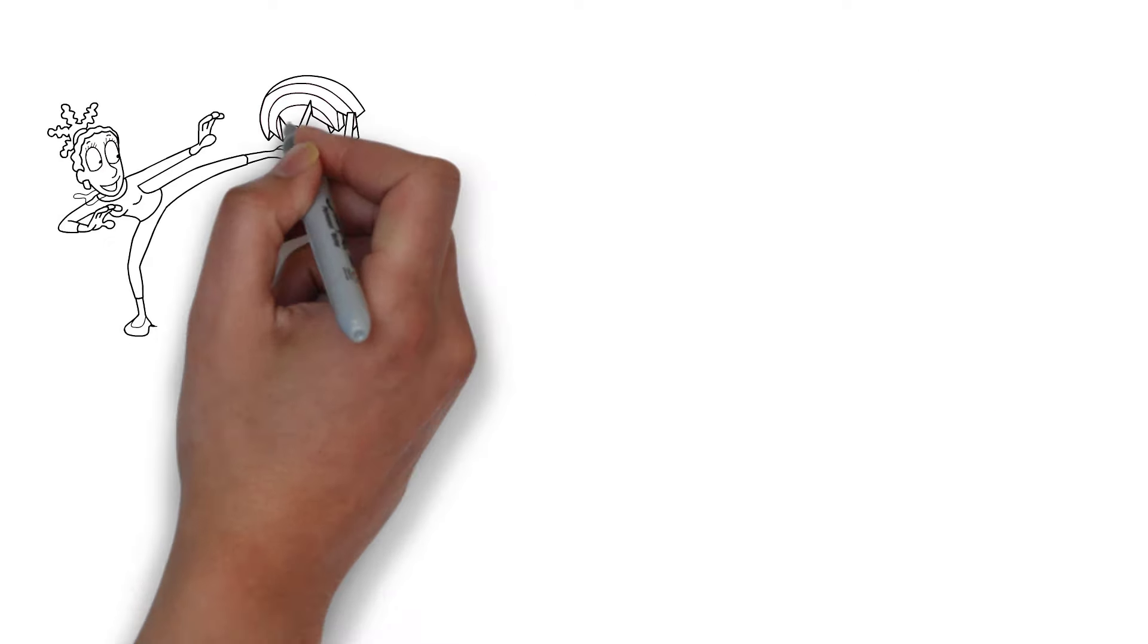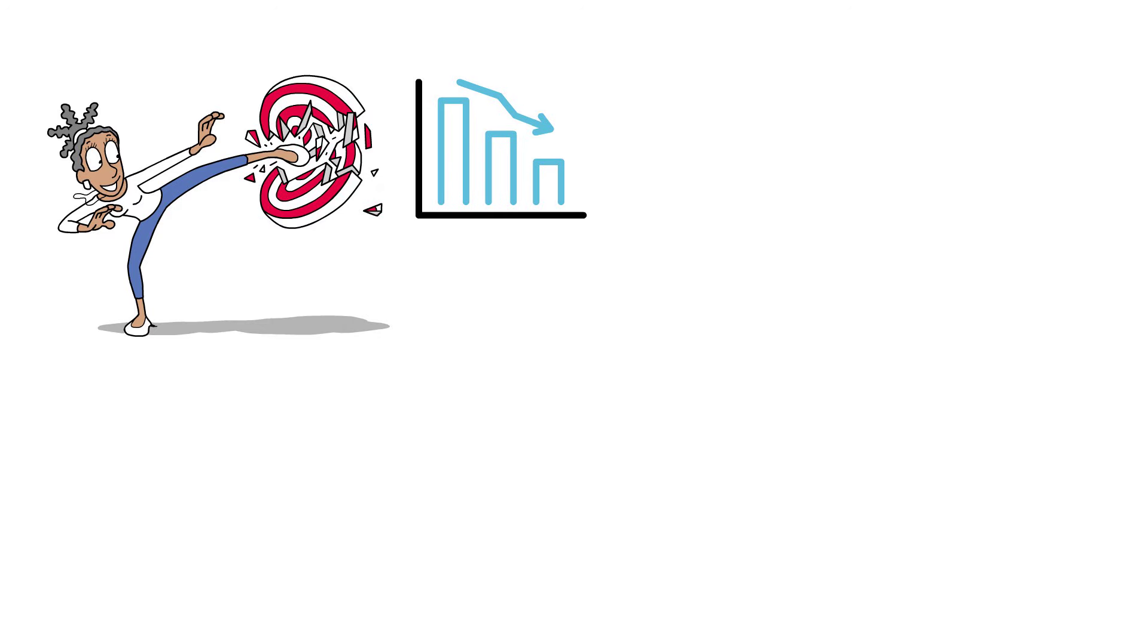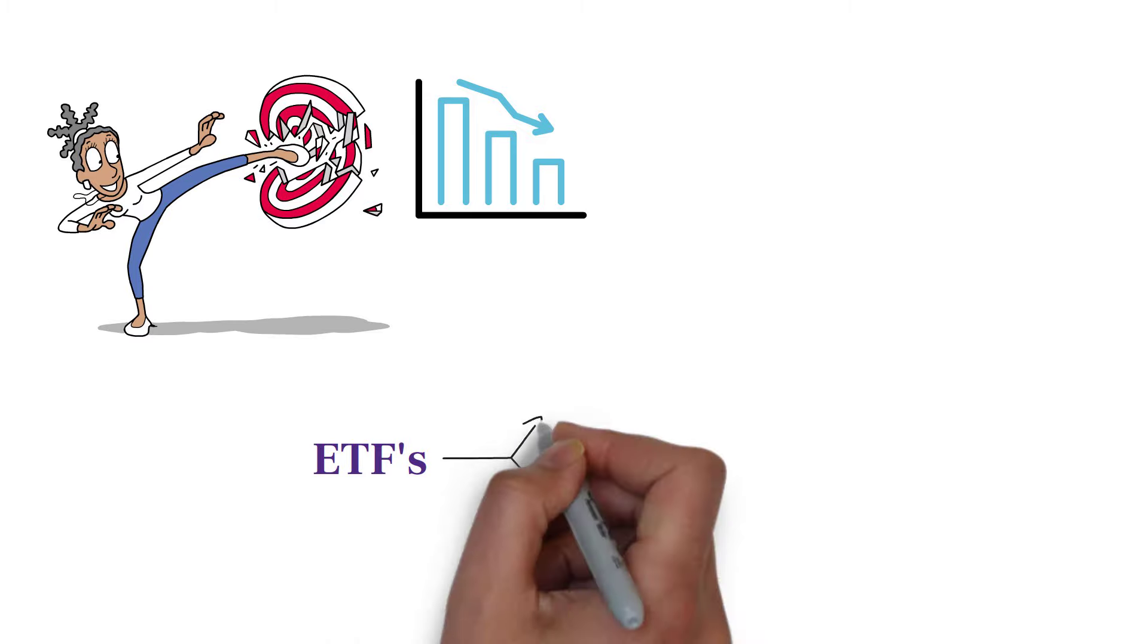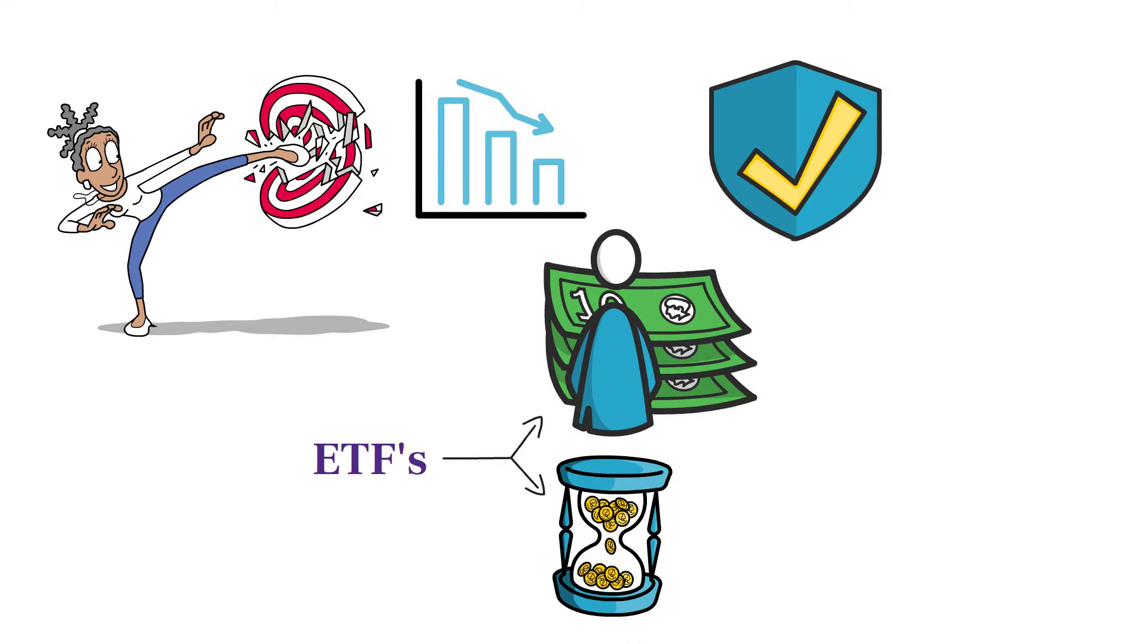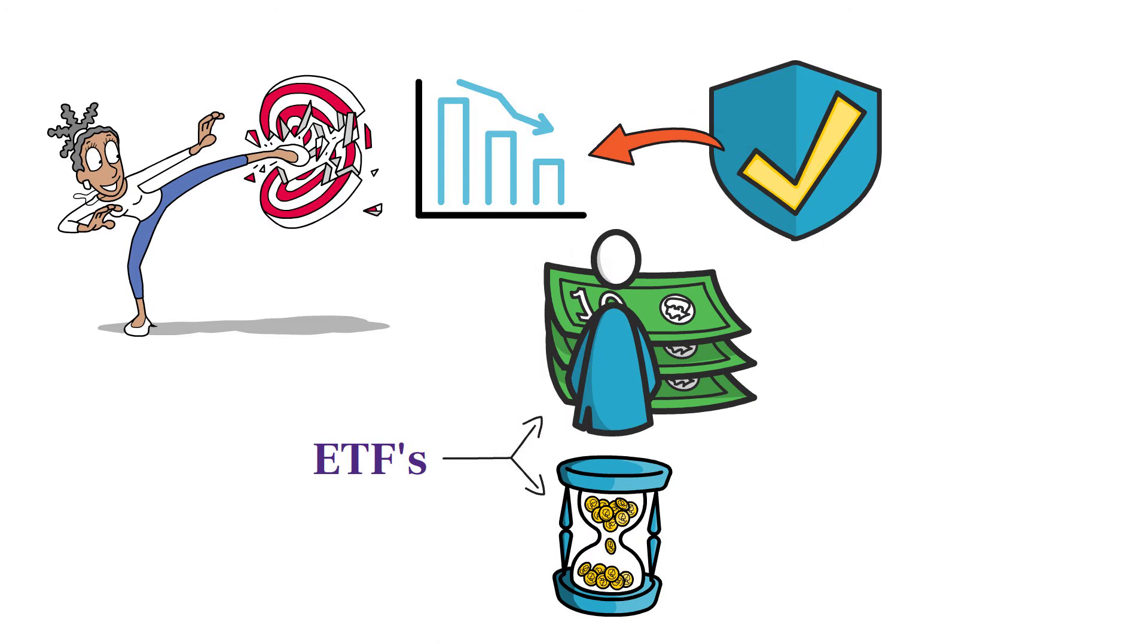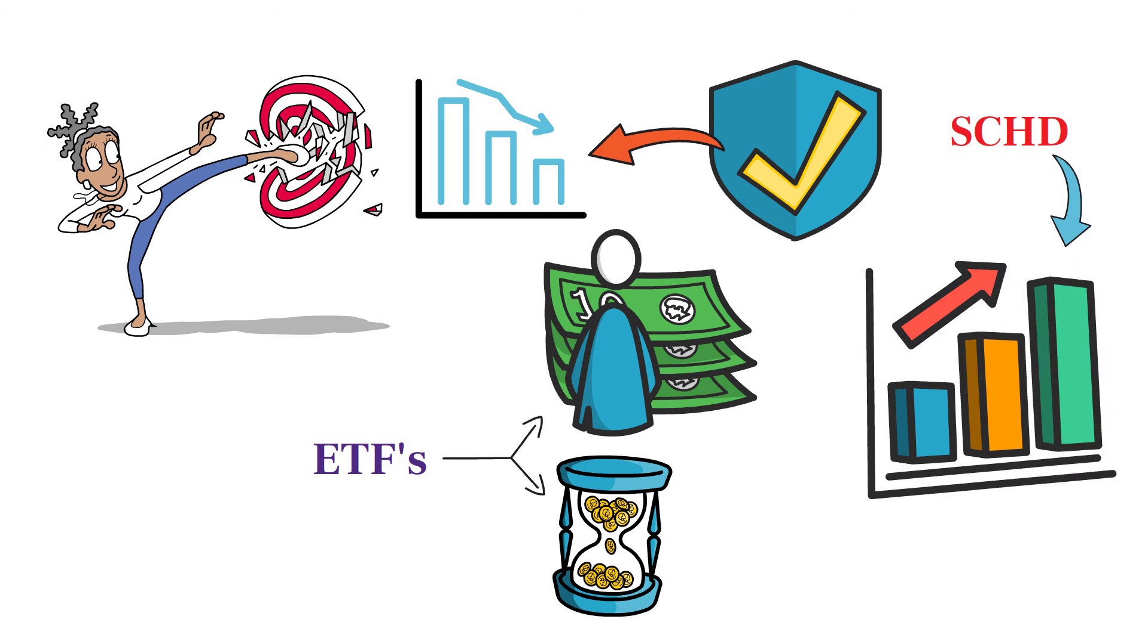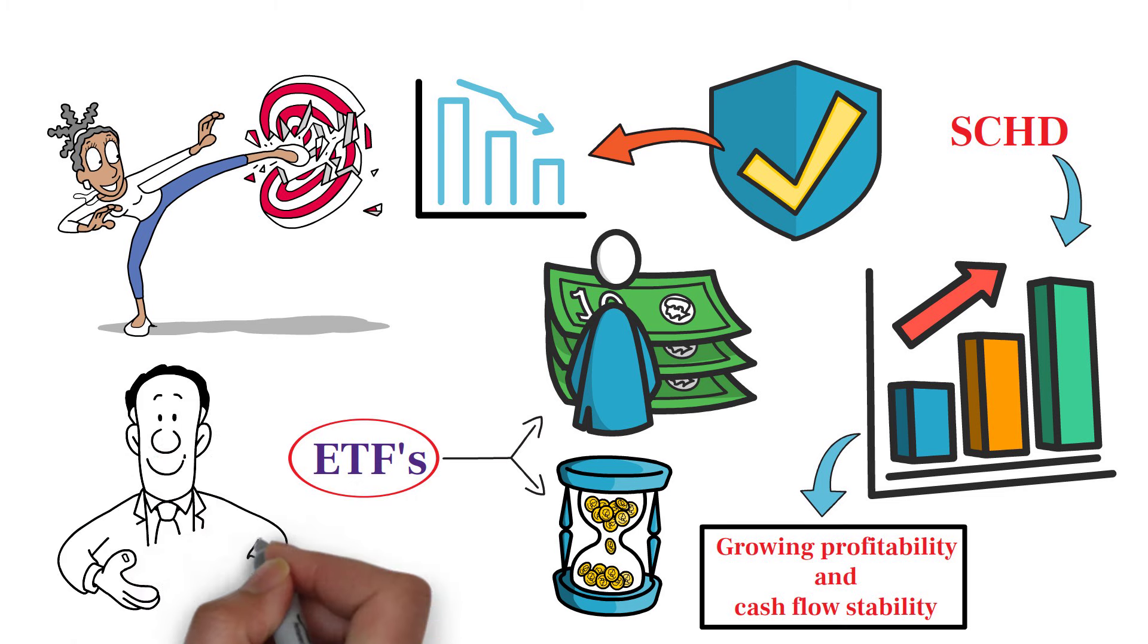One of SCHD's standout qualities is its resilience during economic downturns and market volatility. The ETF's focus on financially stable, high-yielding companies allows it to weather tough economic conditions better than many broader market indices. Moreover, SCHD has shown a consistent increase in dividend payouts. This trend reflects the growing profitability and cash flow stability of its constituent companies, making it a reliable option for investors seeking regular income streams.